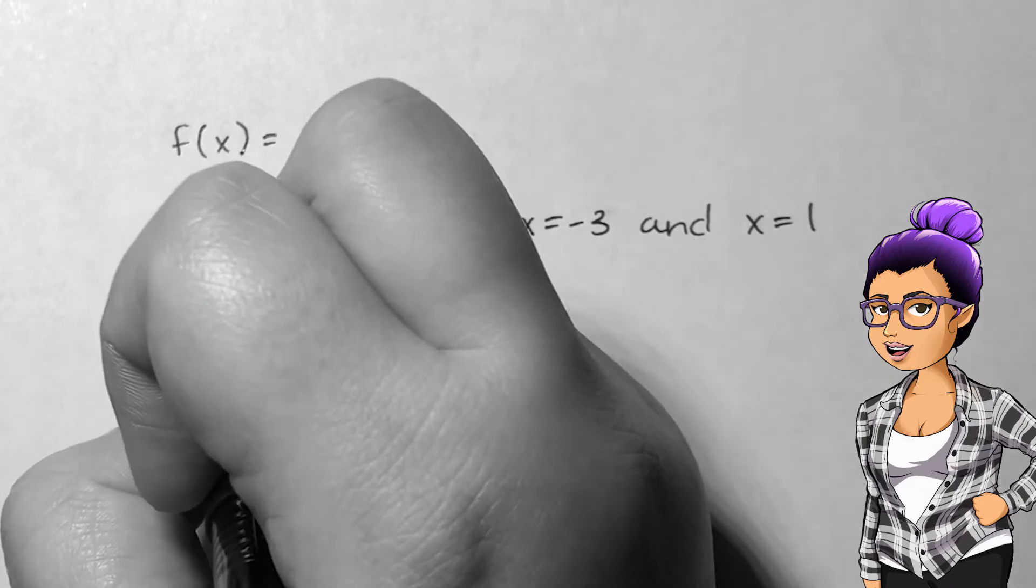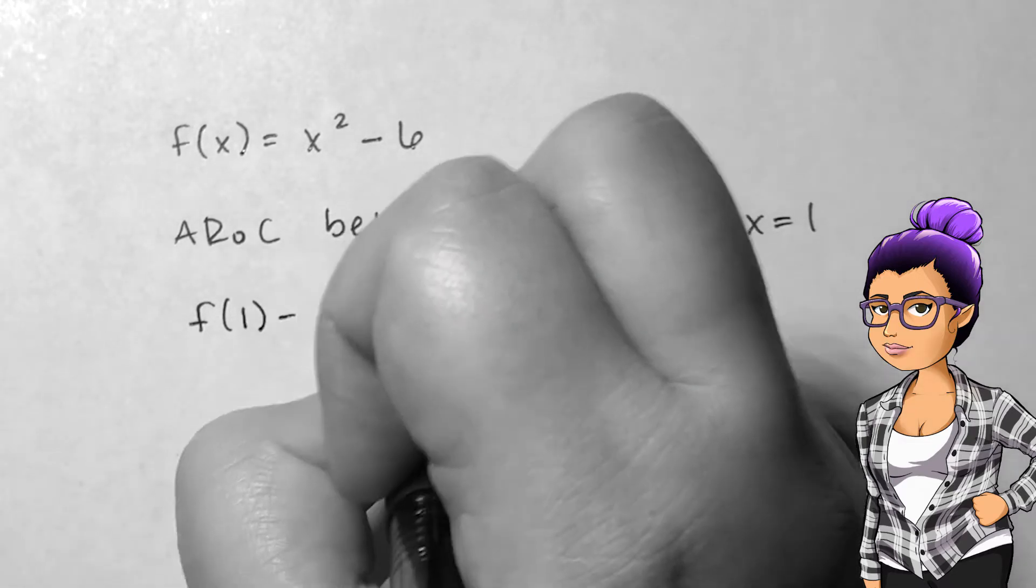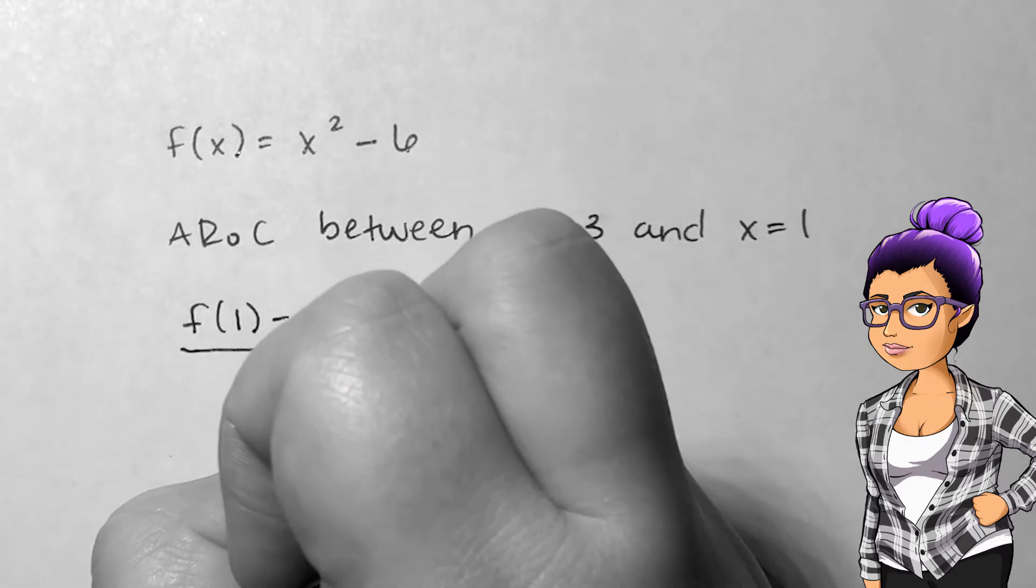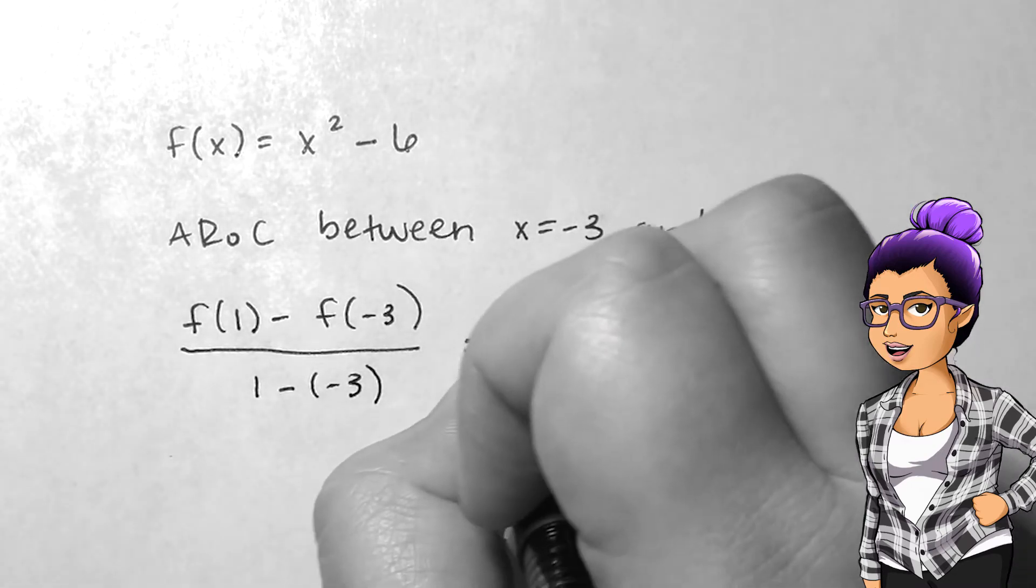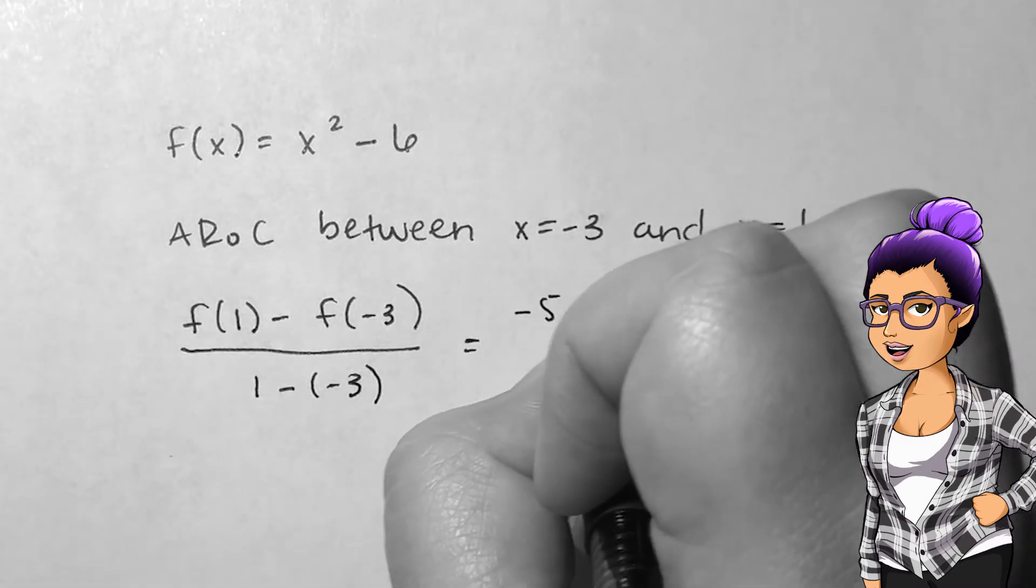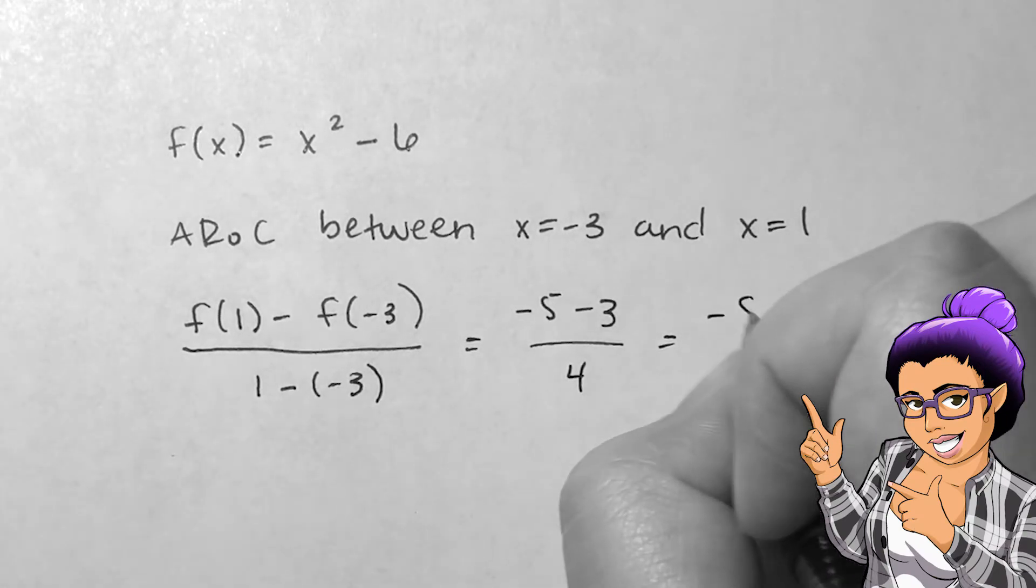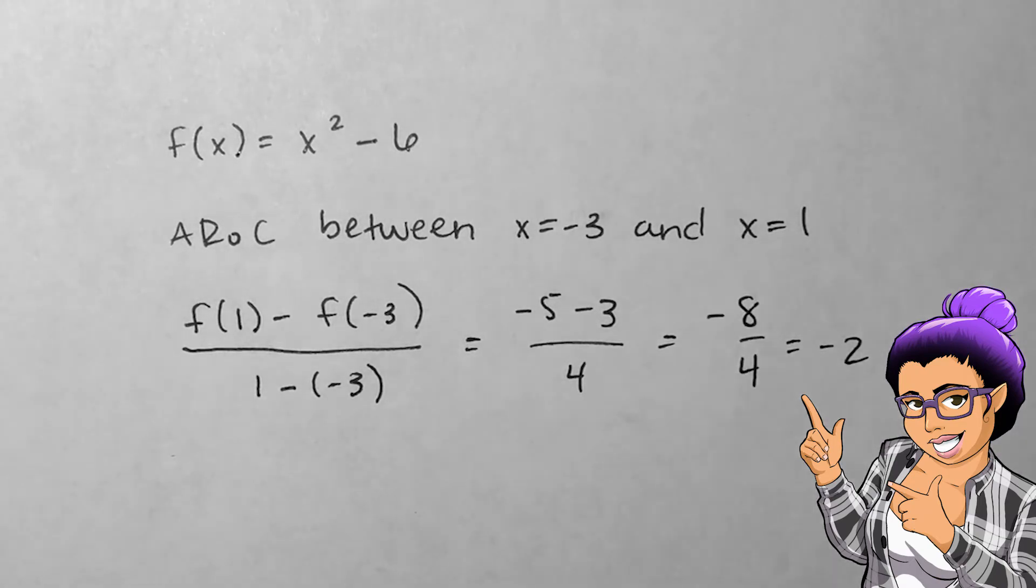f(1) minus f(-3) over 1 minus negative 3. I find that f(1) is negative 5 and f(-3) is 3, so my average rate of change simplifies down to negative 8 over 4 or negative 2. This means that on average between negative 3 and 1, the function is decreasing by 2 for every change in input by 1.